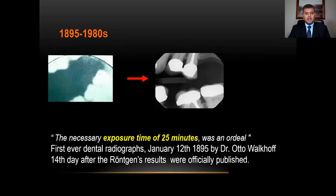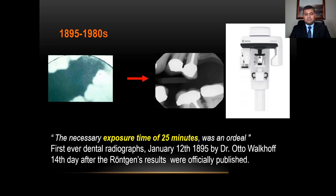We have two images on our screen. The image on the left is the first ever dental radiograph, made by Otto Wolkow, a German dentist who held a photographic plate in his mouth and exposed himself to radiation for 25 minutes. Over the next 100 years, there was improvement in dental radiograph quality. The modern bitewing radiograph on the right shows crowns, PFM crowns, and endodontic obturation — but we were still missing the buccolingual information, which was brought to us by cone beam CT.